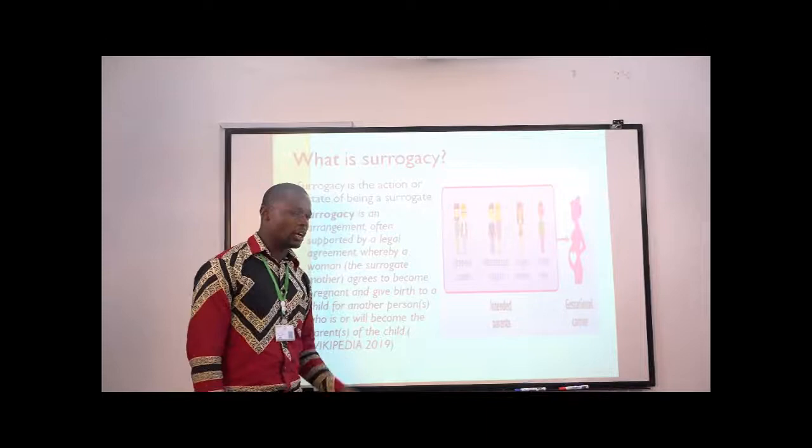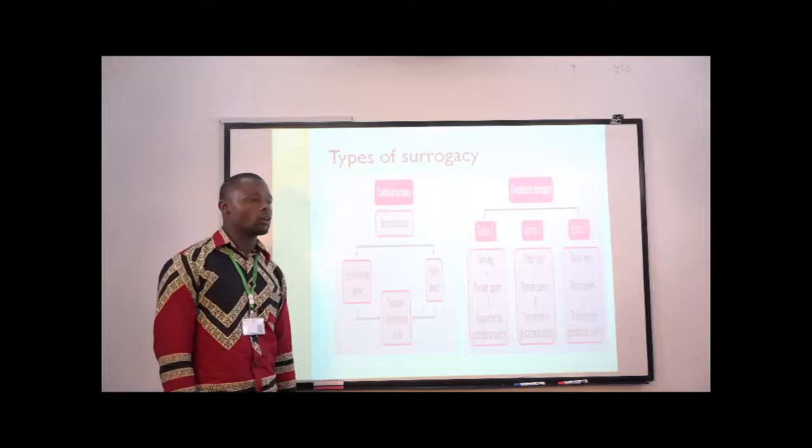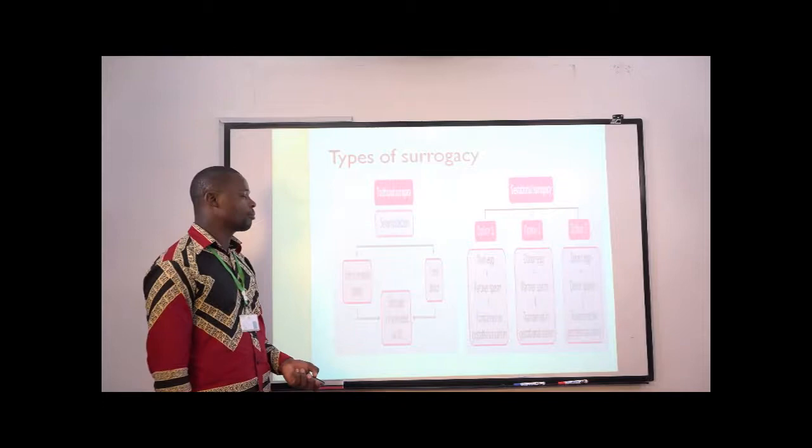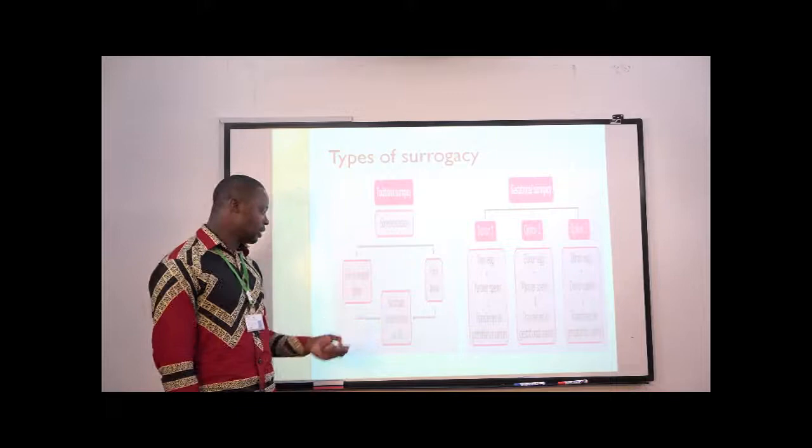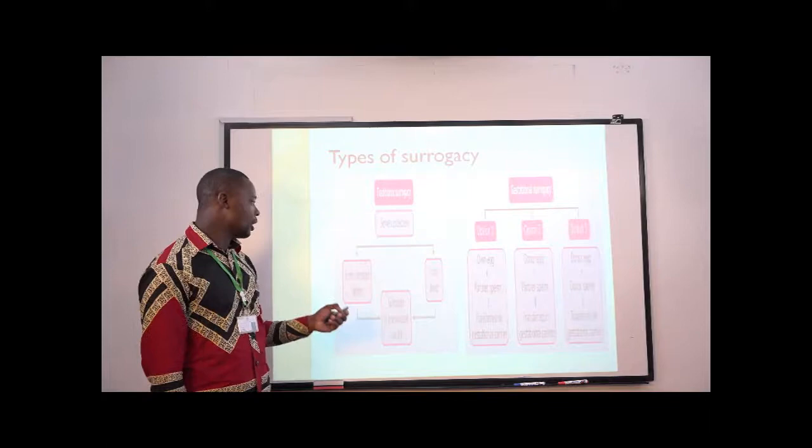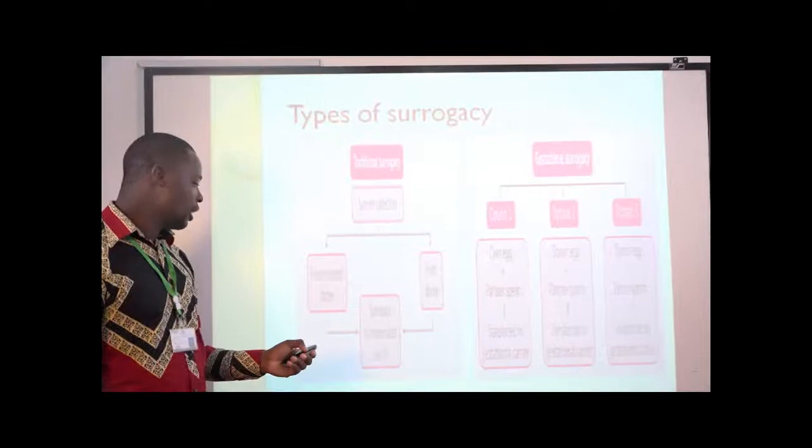Let us look at the types of surrogates. There are two types: traditional surrogacy and gestational surrogacy. In traditional surrogacy, which is practiced in society, there is a type of semen collection where the semen will be inseminated in the surrogate mother by what is called IUI, or intrauterine insemination.